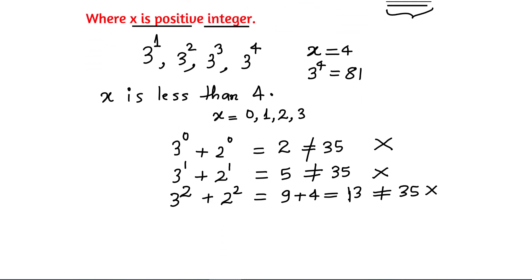X equals to 3. So 3 raised to the power 3 plus 2 raised to the power 3, that is 27 plus 8, which is equal to 35. So this is correct. This means X is equal to 3 is a solution.